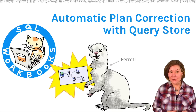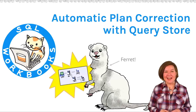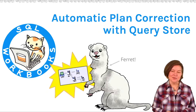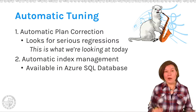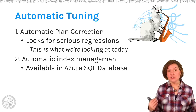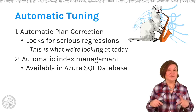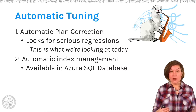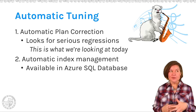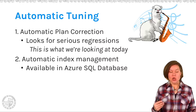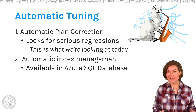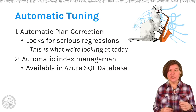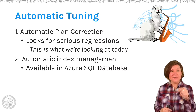Welcome to Automatic Plan Correction with Query Store. My name is Kendra Little and I am the founder and creator of sqlworkbooks.com. Today we will be looking at one part of the new automatic tuning features in SQL Server — specifically a feature called Automatic Plan Correction, which uses Query Store in SQL Server 2017 or higher to look for cases where a query has slowed down significantly and automatically give you the fast plan.